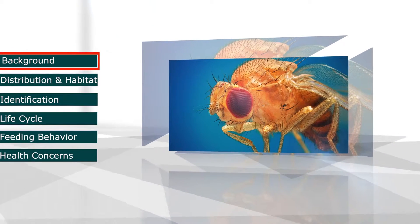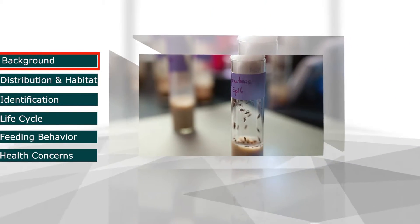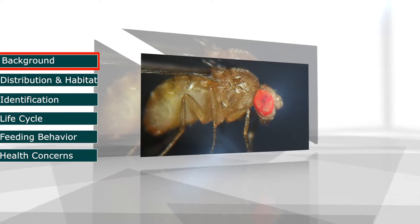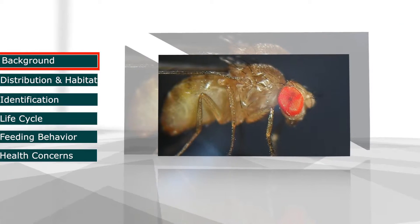Fruit flies played a major role in understanding human genetics. Because fruit flies reproduce rapidly and are easy to maintain in laboratories, they serve as a perfect specimen for inheritance and hereditary research.